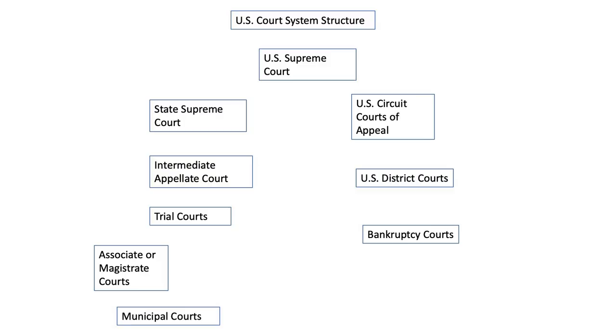Now, if there is a question about the law of the state, that's the state Supreme Court, and we'll get to that. But federal questions and federal constitutional questions are the province of the United States Supreme Court. Below the United States Supreme Court, however, we have the circuit courts of appeal. There are 11 of them plus the federal circuit, and they are designed to cover varieties of states.